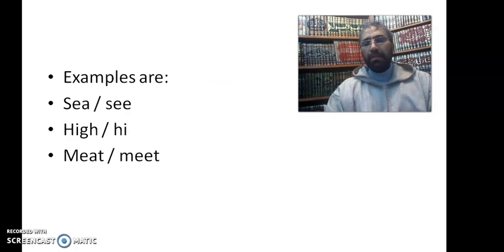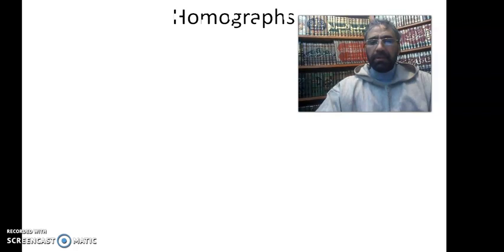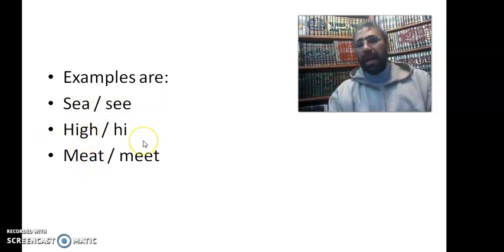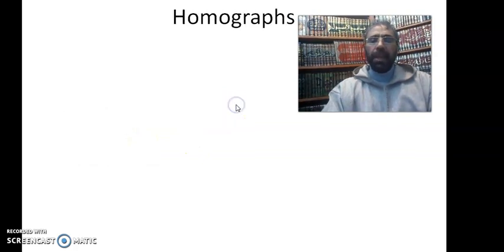Meat and meet - the meat that you eat or meet when you meet somebody. So these words like sea and see, high and hi, meat and meet are examples of homophones because they are written differently, they have different spellings as you can see, but they're pronounced in the same way.